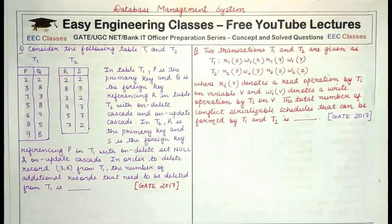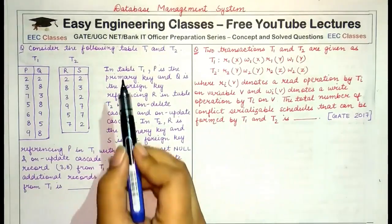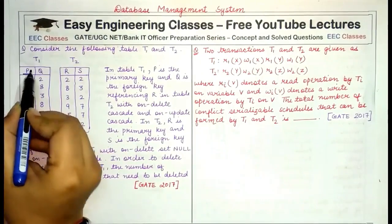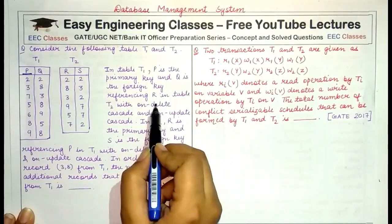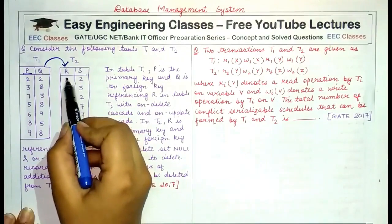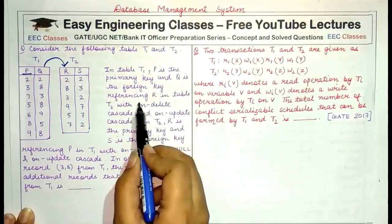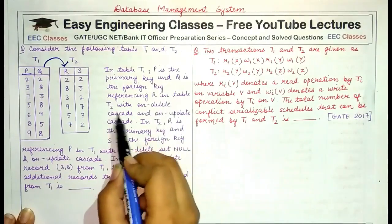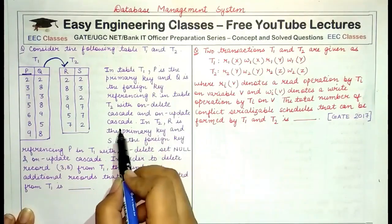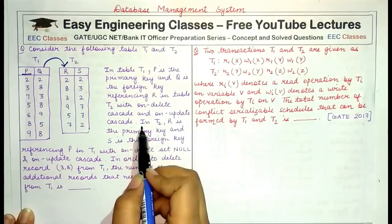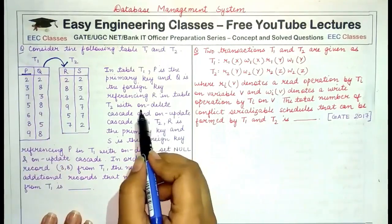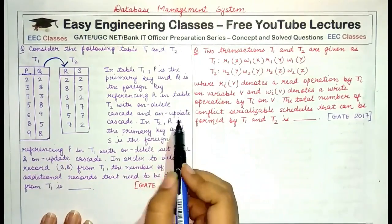We are given two tables T1 and T2. In table T1, P is the primary key and Q is the foreign key referencing column R in table T2. This referencing of Q to R in table T2 is done with ON DELETE CASCADE and ON UPDATE CASCADE constraints.